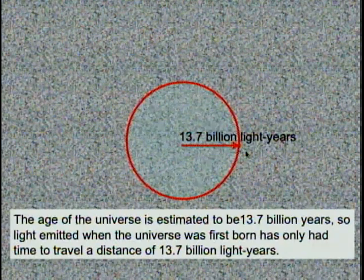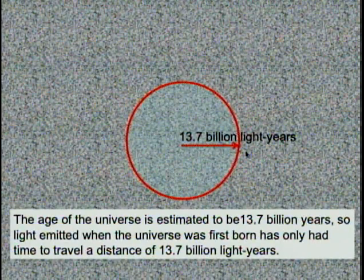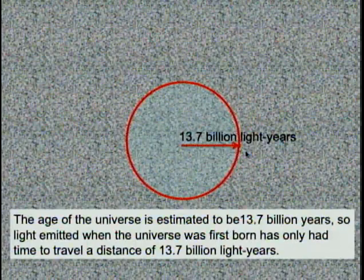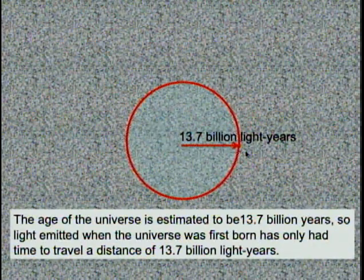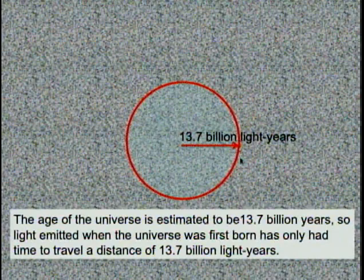Objects that are further than 13.7 billion light years from us cannot be observed yet. It's possible that they will be able to be observed as the universe continues to expand, but it depends on how fast the expansion of the universe is. So the observable universe is limited, and it's centered around us, around our position here, and it's 13.7 billion light years in radius.